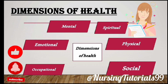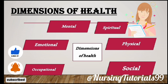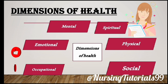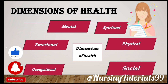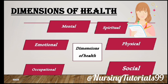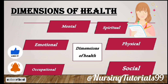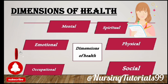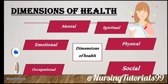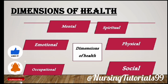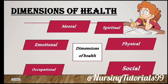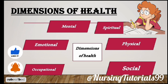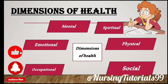First, let's see what we mean by dimensions of health. Dimensions means the different ways we look at health — how health can be influenced by different types of factors. In the dimensions of health, we have six types: physical, social, occupational, emotional, mental, and spiritual. I will explain each one by one with clear information.